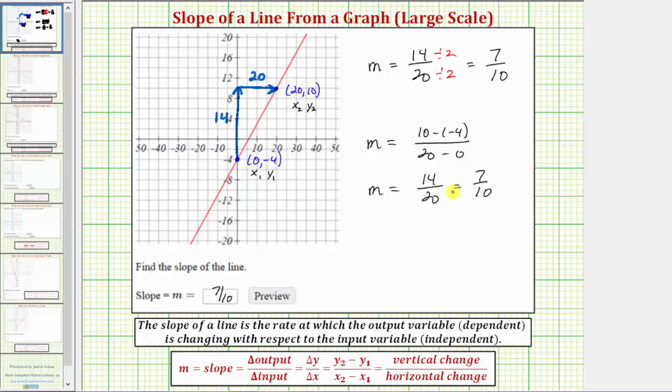Going back to the graph one last time, this also tells us if we were to select any point on the line, let's just say this point here, and then go up 7 units and right 10 units, we can find another point on the line. So if we were to go up 7 units: 2, 4, 6, 7, and then right 10 units: 5, 10, notice how we do find another point on the line. I hope you found this helpful.